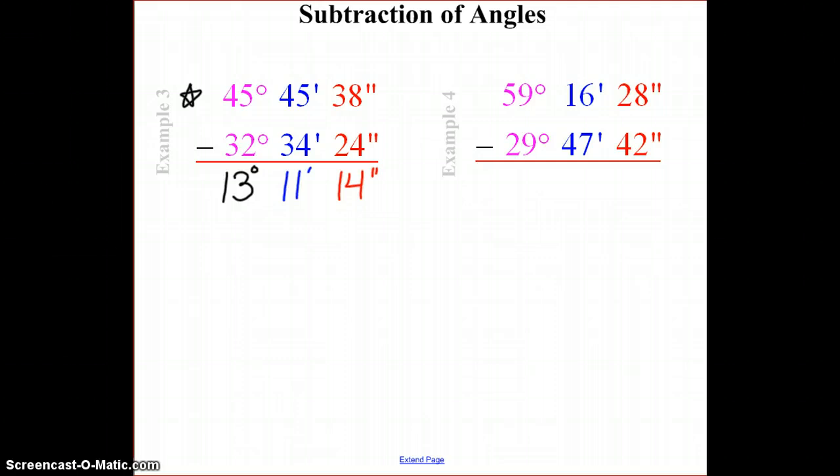Noticing that the angle on top, each unit was greater than the unit underneath it. 45 is bigger than 32. 45 is bigger than 34. And 38 is bigger than 24. So we never would have ended up with anything that's negative.